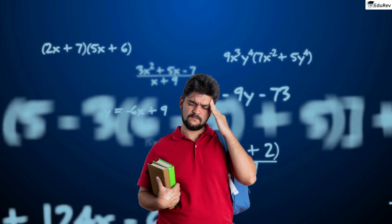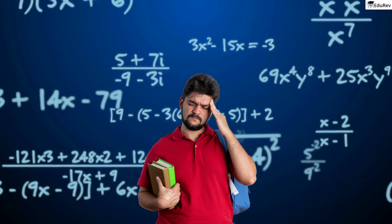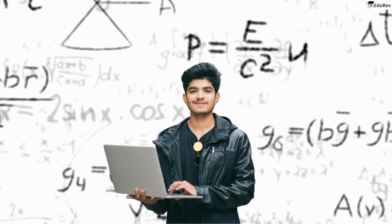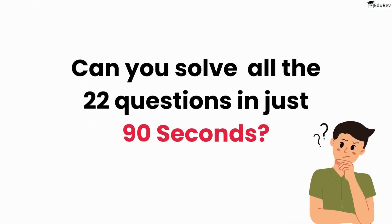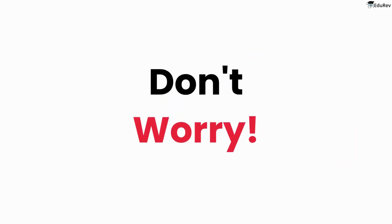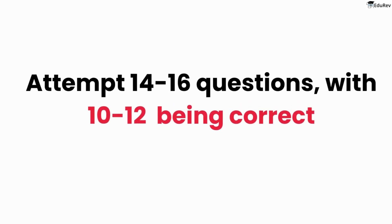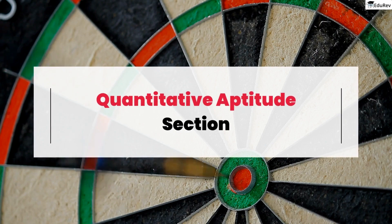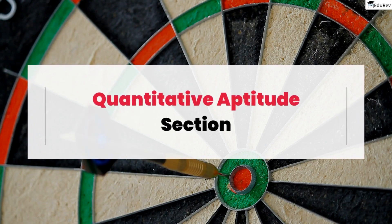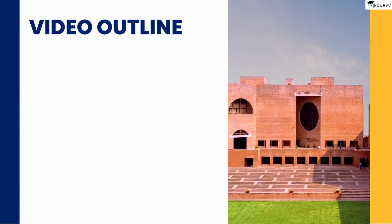Do you get anxious when you hear about math equations? Well, then there's a lot for you to learn in this video. Or perhaps you're an engineer who thinks they have it all figured out. But can you solve all 22 questions, each in just 90 seconds? You don't need to attempt all the questions. If you can attempt 14 to 16 questions with 10 to 12 of them being correct, you are closer to achieving the 99 percentile. Preparing for the QAN section requires a specific approach and strategy, where speed and accuracy matter the most, and that's exactly what we're here to discuss.